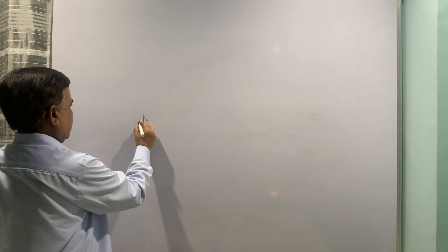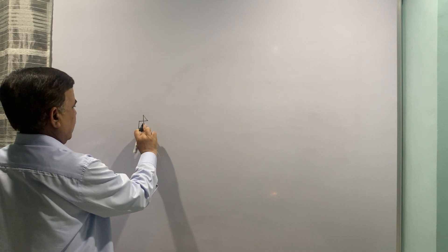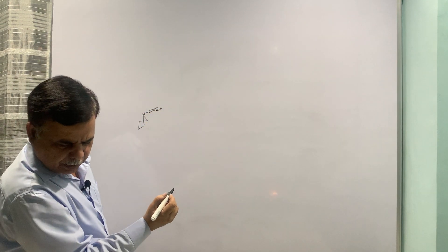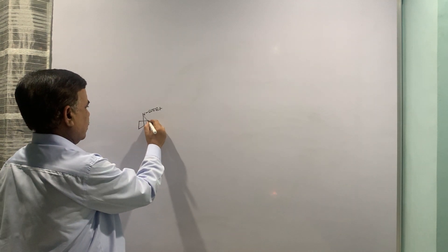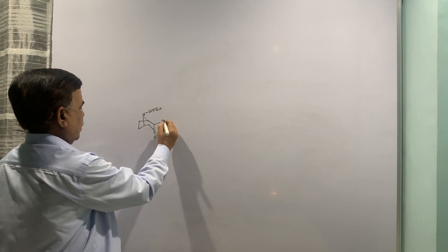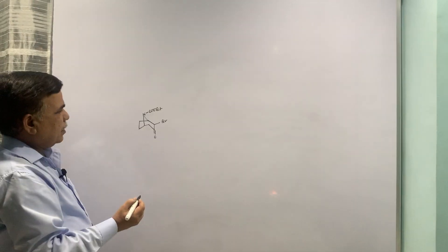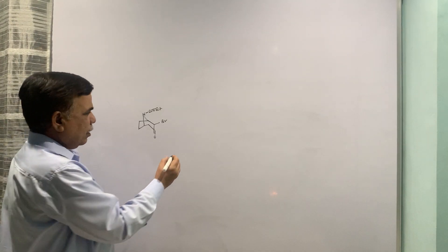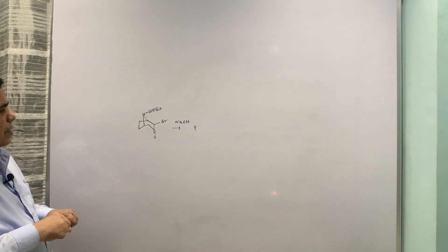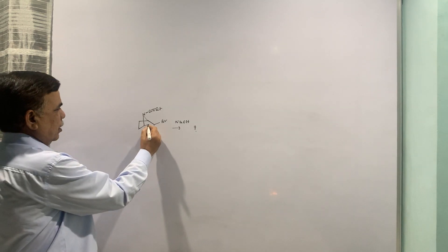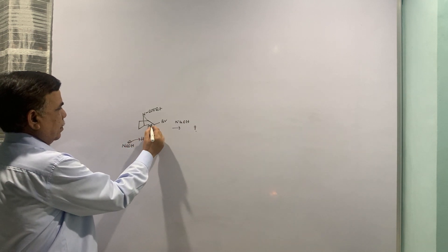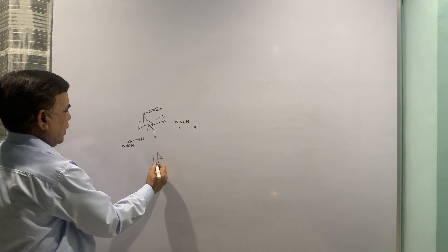Next example, this is little different example. Let me put this is N-CO-O-Et and then this is the compound and now you have got NaOH to react with. This is your classical Favorskii rearrangement. The job of NaOH is to abstract this proton and it will knock out the bromide.